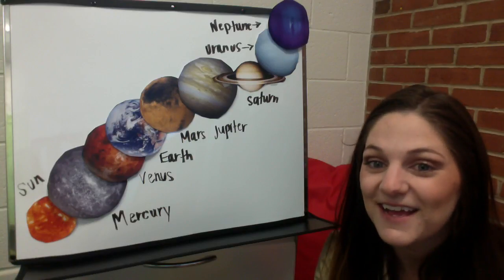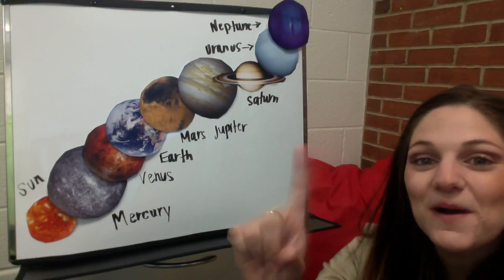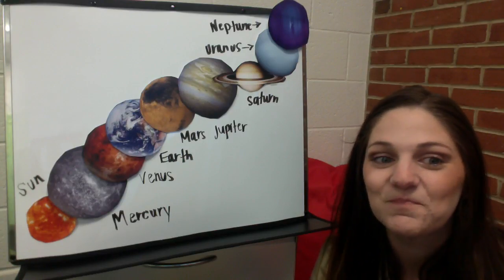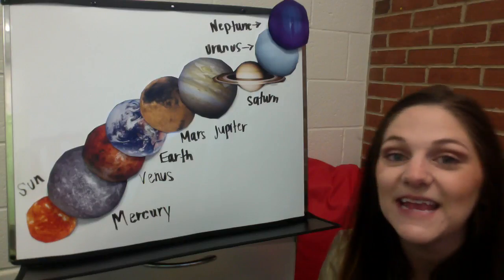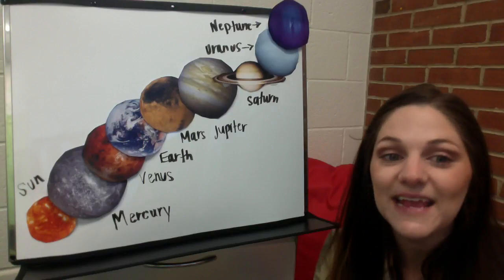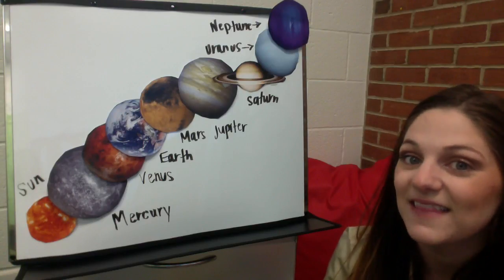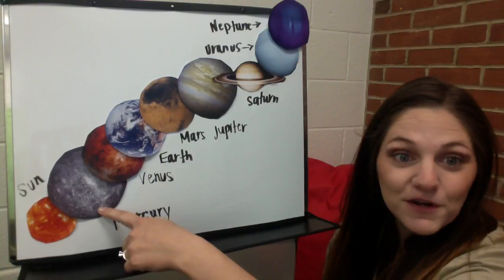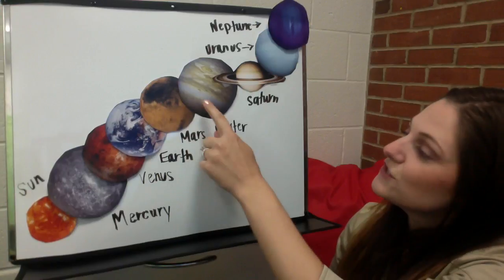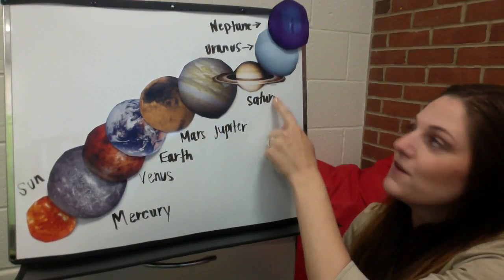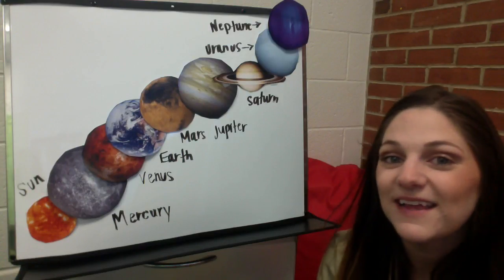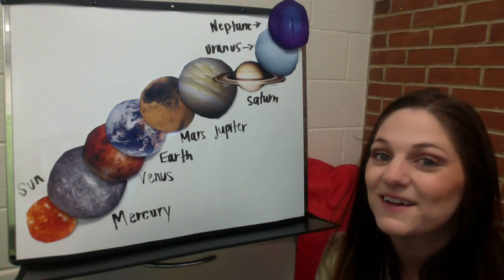Our Sun has eight planets. Let's sing them right now. First Mercury, then Venus, Earth, Mars, Jupiter, Saturn, Uranus, Neptune. Our Sun has eight planets that orbit around.